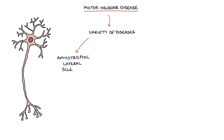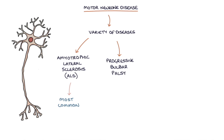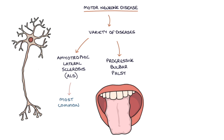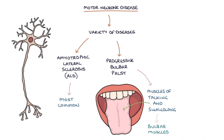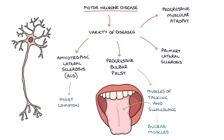Amyotrophic lateral sclerosis, or ALS, is the most common and well-known type of motor neuron disease — Stephen Hawking had ALS. Progressive bulbar palsy is the second most common form and primarily affects the muscles of talking and swallowing, the bulbar muscles. Other types to be aware of are progressive muscular atrophy and primary lateral sclerosis.